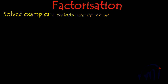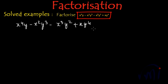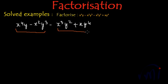We have to factorize x to the power 4y minus x squared y cubed minus x cubed y squared plus xy to the power 4. So let's do the pairing — I am pairing the first two terms and the last two terms.